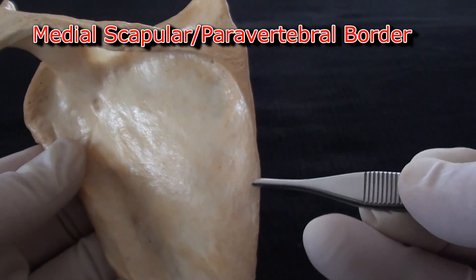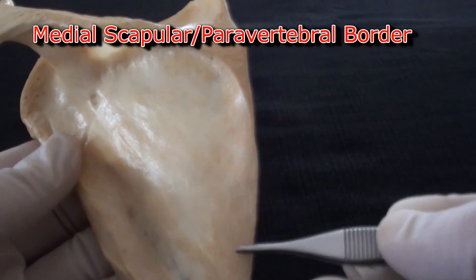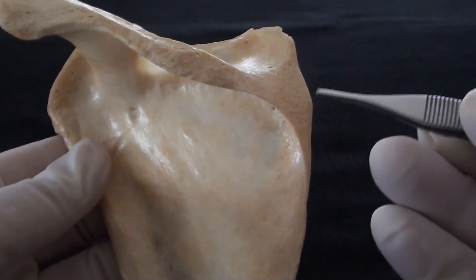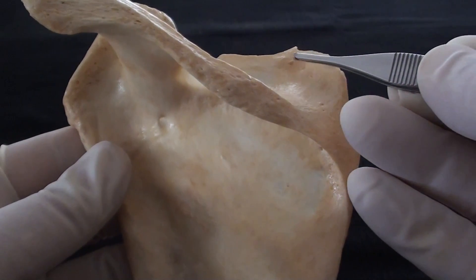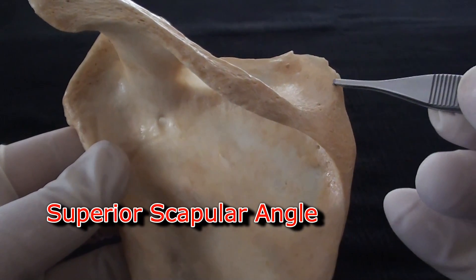This is medial scapular or paravertebral border. When these two borders intersect, they form the superior scapular angle.